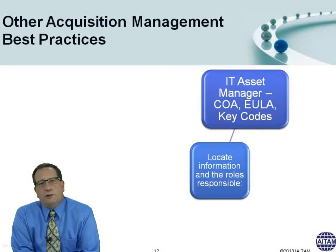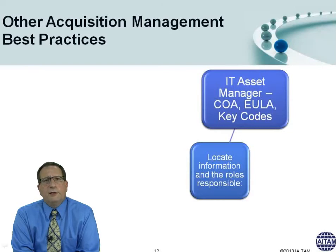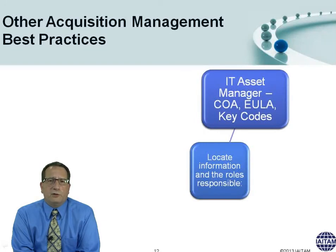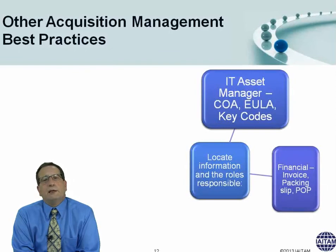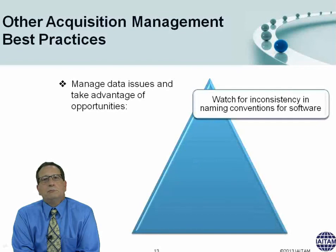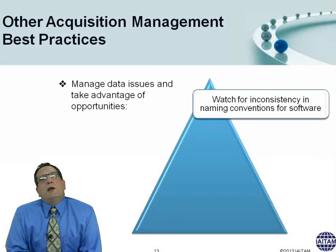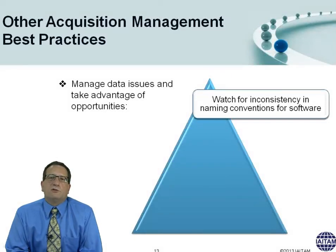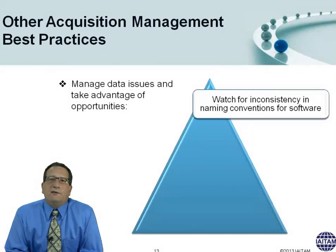Other acquisition best practices: consider what information goes to which role. The IT asset manager receives the certificate of authenticity, user license agreement, and key codes. Financial gets invoices, packing slips, and proof of purchase. Help desk gets manuals, warranty, and maintenance information. We also have to manage data issues — one major inconsistency is naming conventions for software — and take opportunities to identify inconsistencies wherever possible.